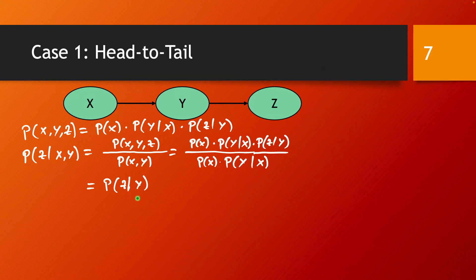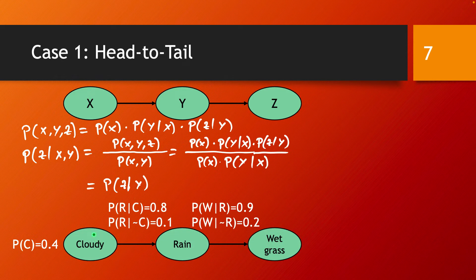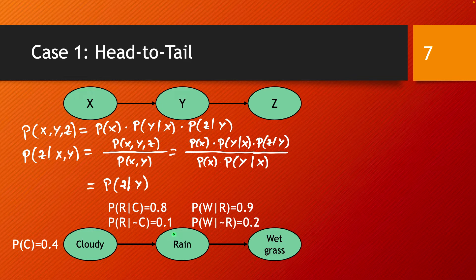Here is an example of a head-to-tail connection. We have a model with three variables: one accounting for having a cloudy day, another for having a rainy day, and another for the grass in our yard getting wet. Based on long-term observations, the probability of having a cloudy day any day of the year is 0.4. The conditional probabilities for rain given a cloudy day or given no cloudy day are set accordingly. Even though the model only has an arrow from cloudy to rain, it implicitly includes the possibility of rain for other reasons, accounted for by the second conditional probability.